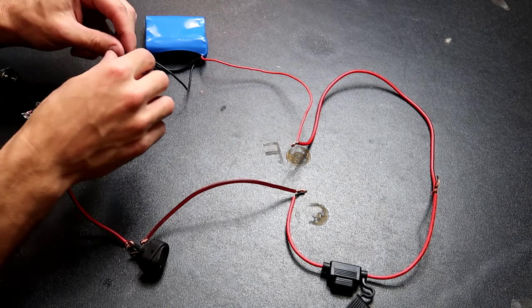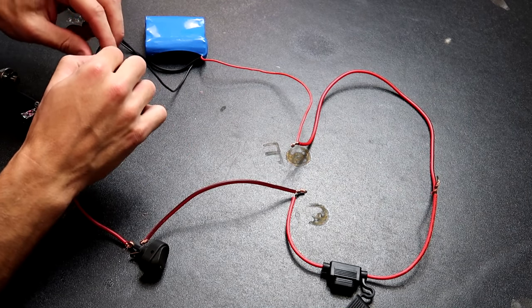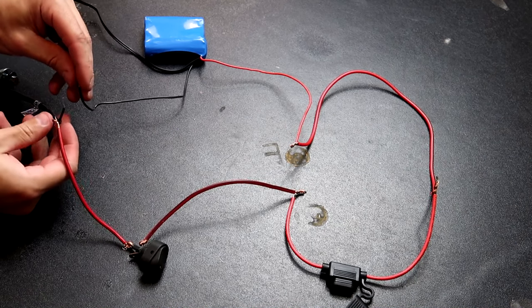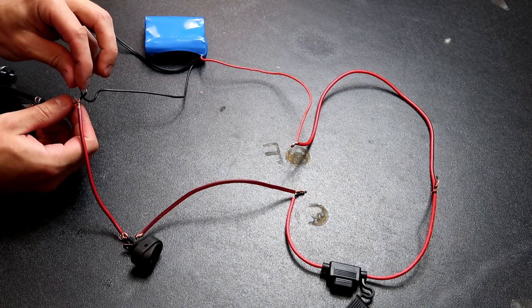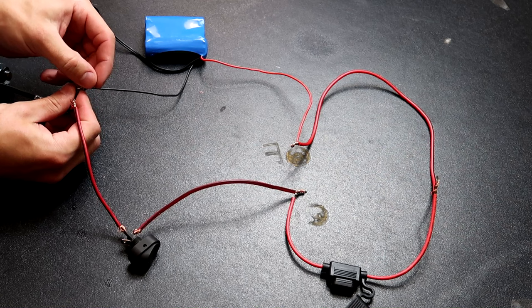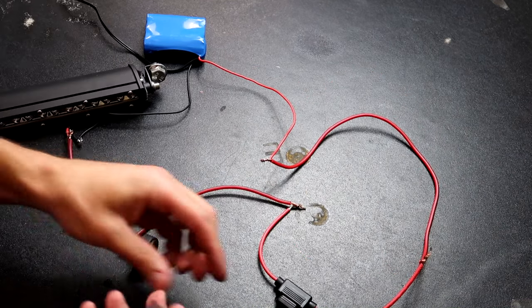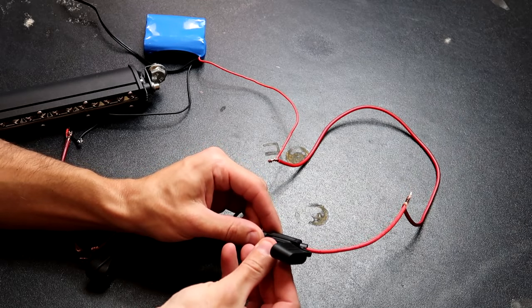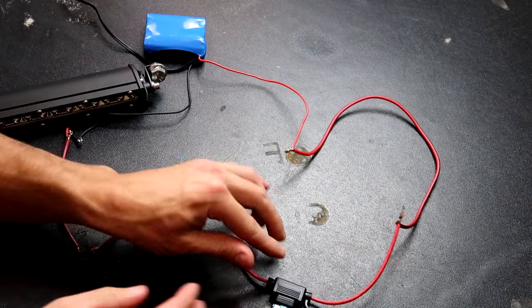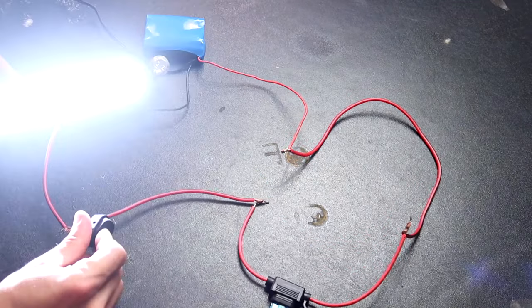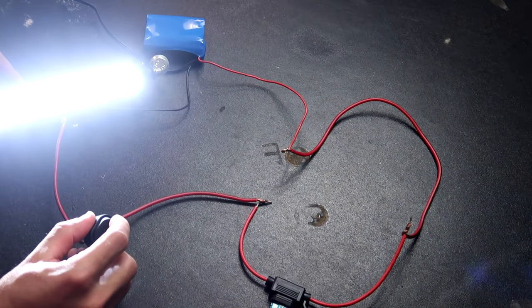Now all we got to do is get the negative coming out of the battery and attach it to the negative coming out of the light. Go ahead and put your fuse in. 15 amp fuse. All right, let's see if it works. It's working.